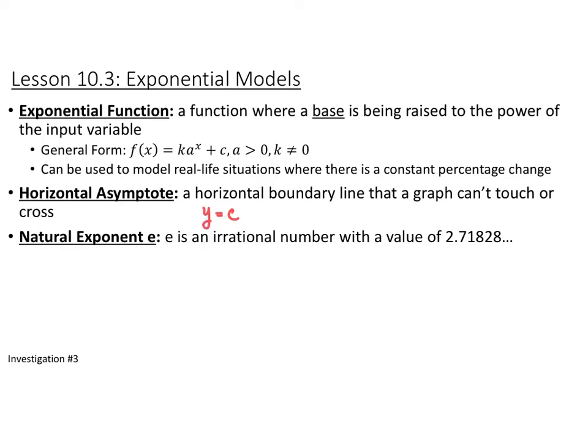We also have the natural exponent e. E is an irrational constant with a value of about 2.71828, continuing on forever with no repeating pattern — think of it very similarly to pi. From now on, whenever we see e, it is our natural exponent e; it is not a variable.